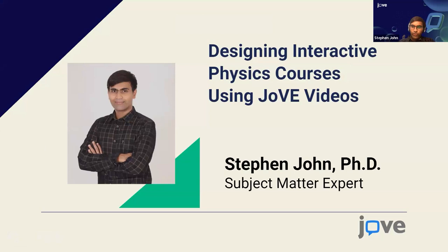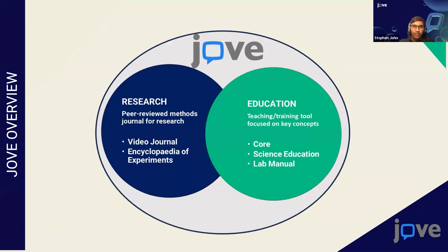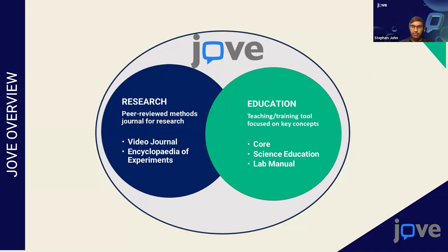Before we go into our physics collections in detail, I'd like to quickly introduce our website. Our JoVE website is focused on teaching and also helps students and researchers to conduct experiments in an easier and better way. Our website is divided into two main collections: research and education. Under research, we have video journals of various subjects — peer-reviewed methods indexed in Scopus and other databases — and our Encyclopedia of Experiments, which are experimental procedures explaining concepts in the research setup.